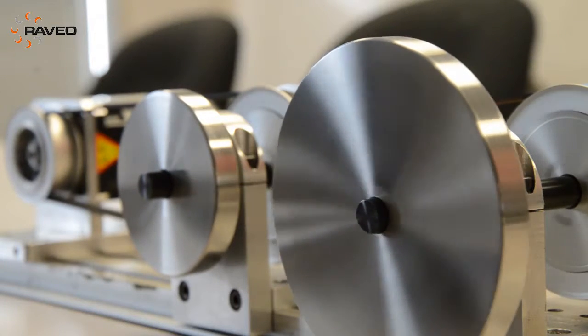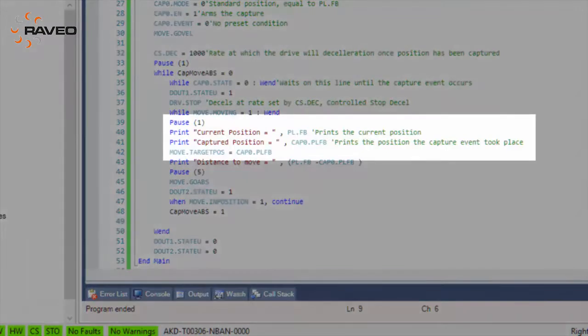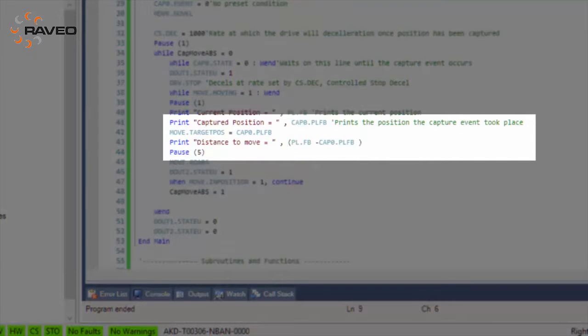The system will decelerate to a stop at a slow deceleration rate. The position at the time a trigger is captured is CAP0.PLFB.